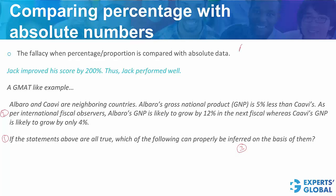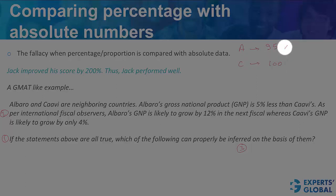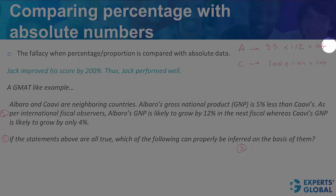What we know is that the GNP of country A is 95 and CAV is 100. This is supposed to grow by 12% and this is supposed to grow by 4%, so this would be 104 and this would be around 106 to 107. Don't waste your time figuring out the exact value — the point is that this is going to be greater than 104.